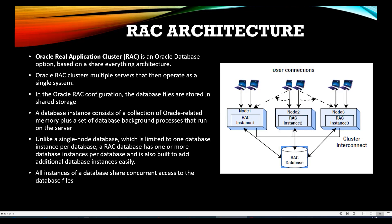Within the RAC architecture, there is intercommunication between nodes. Node one can transfer data from its memory to node two, and vice versa. This is basically called cache fusion — the data block which is in the memory of one node can be transferred across to other nodes.